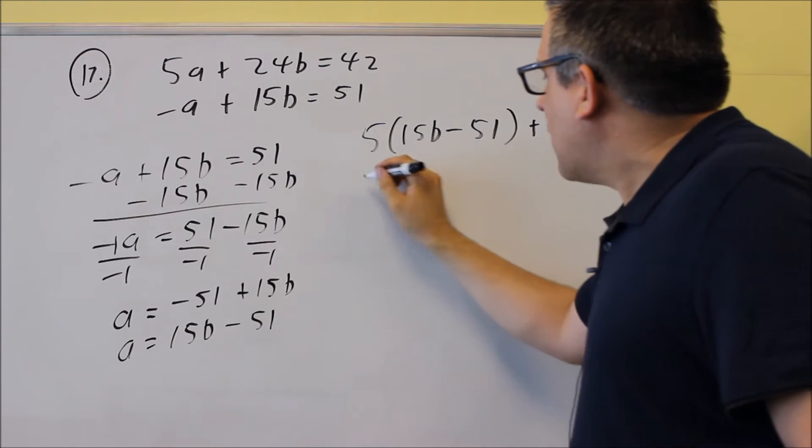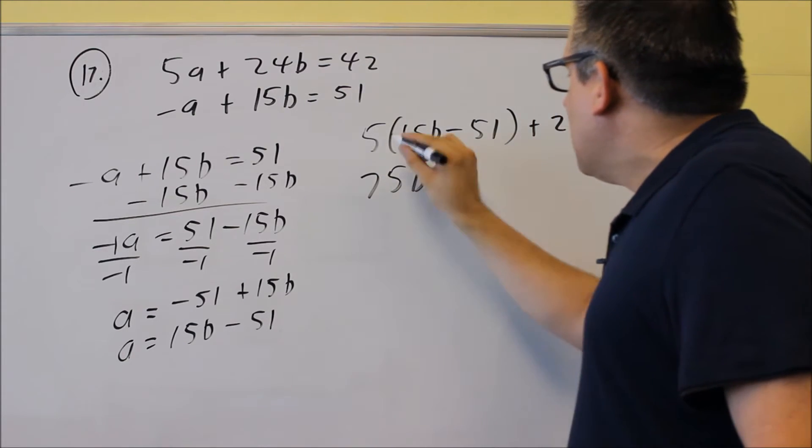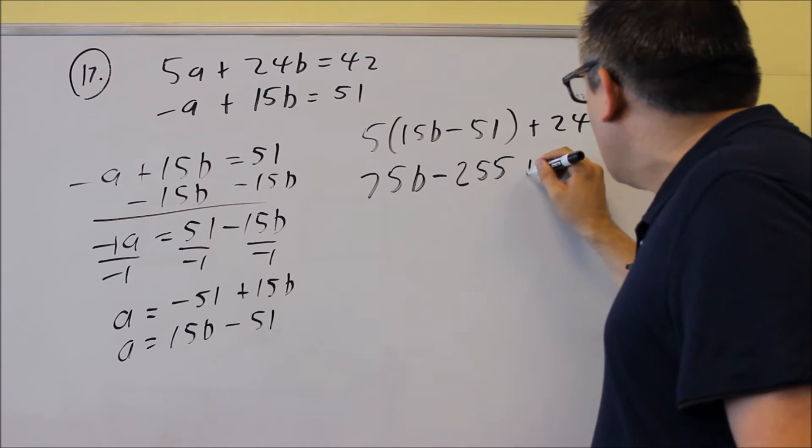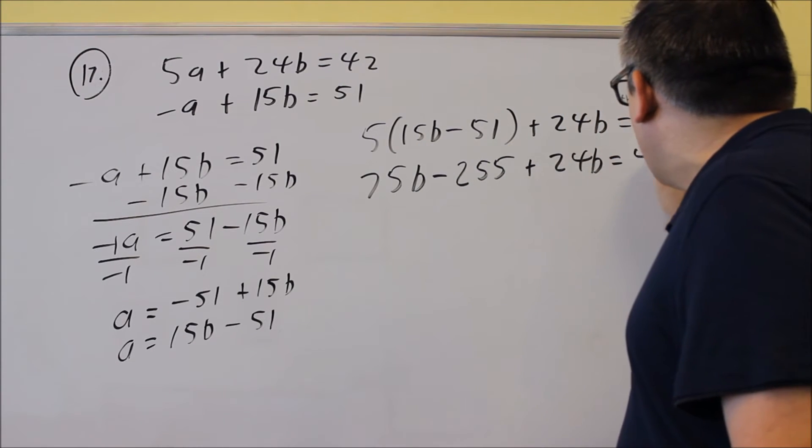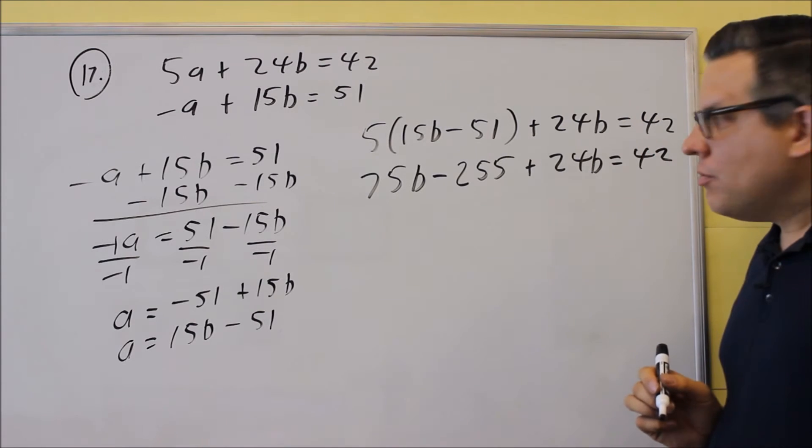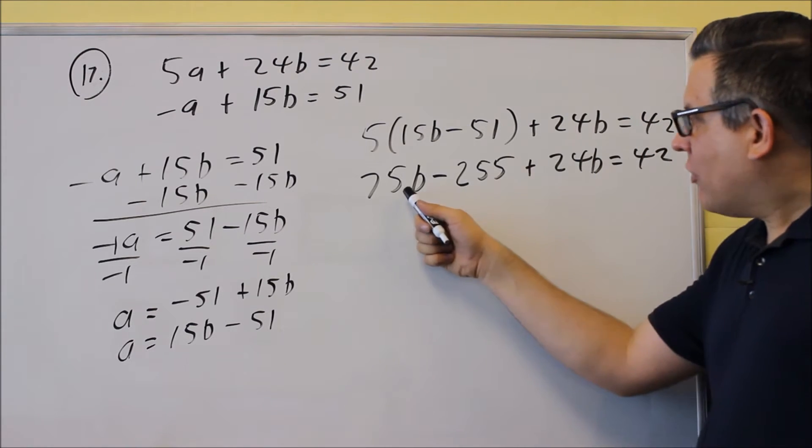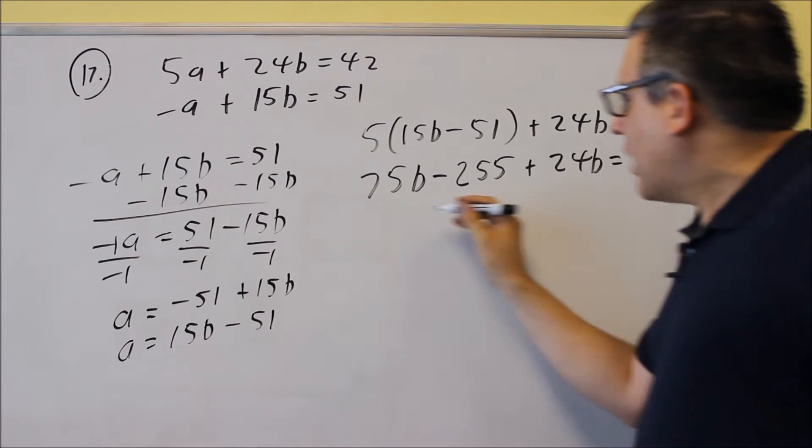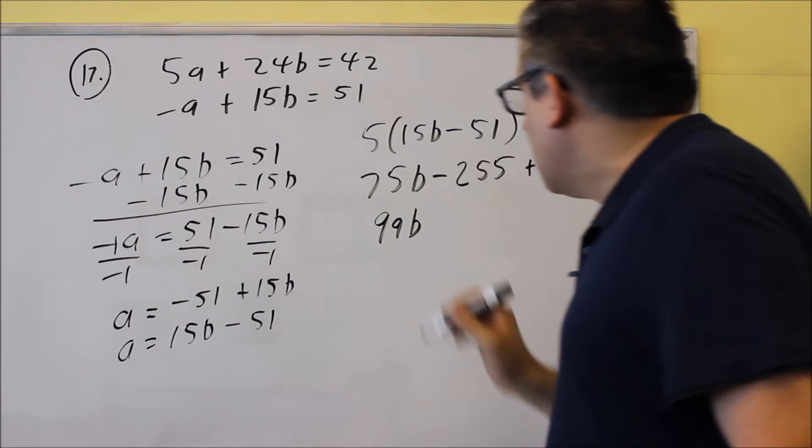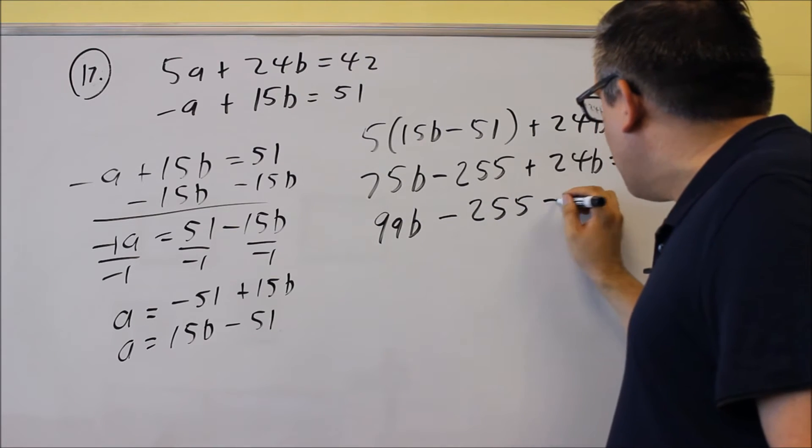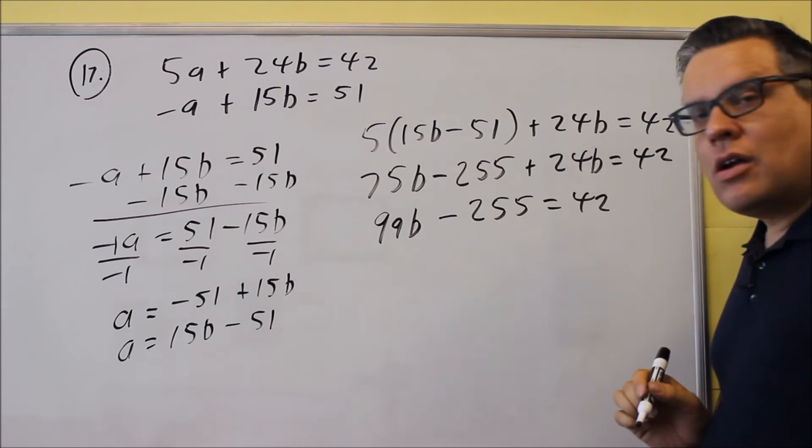Multiply 5 by both things inside here, 75b. If you take 5 times negative 51, you get negative 255 plus 24b equals 42. The only thing we can do here is add like terms together. I have a 75b and a 24b. When I add those together, I'm going to get a 99b. I don't have anything I can combine with 255, so I'll just leave it.